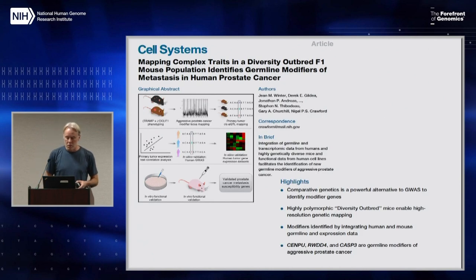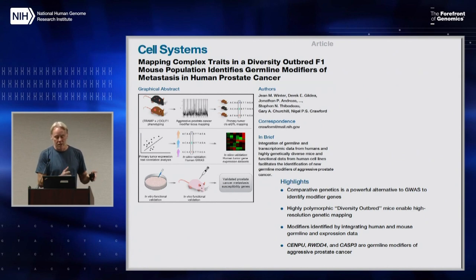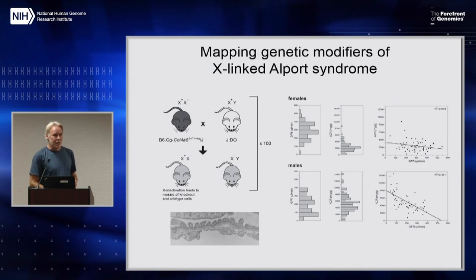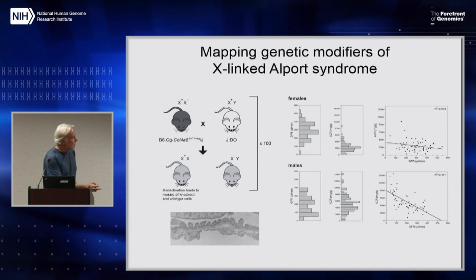If you suspect there are modifier genes in the background, you can go after them. We did this recently with a modifier of PYMT and cancer metastases — a really nice effort by Nigel Crawford, who validated the genes in human cancer patients. But what I really want to talk about to wrap up is a cross that was done in Ron Corstania's lab to look at Alport syndrome. Alport is X-linked, and X-linked genes give us just another variation on how we can do these modifier crosses. So if we take an X-linked Alport mutation, which is a collagen mutation, and cross it with some DO mice, we get a bunch of offspring.